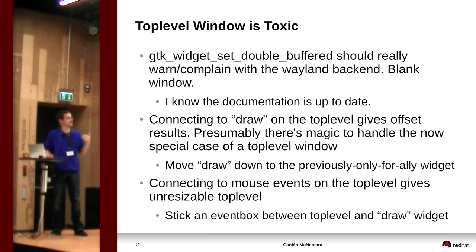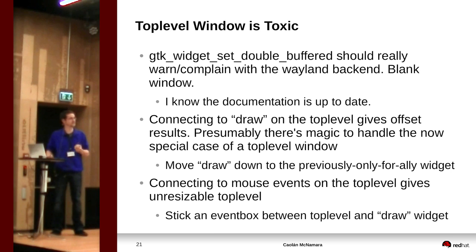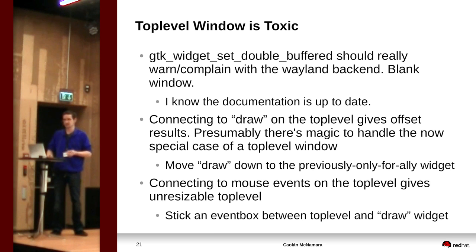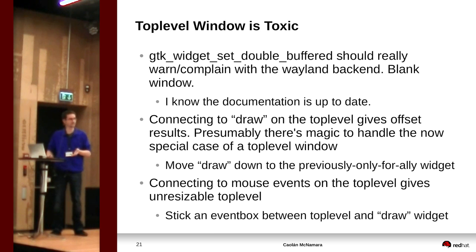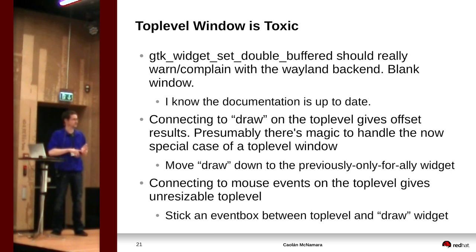The overall solution for anything Wayland-related is to move away from the top-level window and go one level down. We already had a widget underneath the top level that we were using to capture accessibility events. That becomes a far more important widget in GTK3 — it becomes the actual widget we connect events to. So we now draw to that widget: previously it was only used as an accessibility window, but it's now expanded to be the contents of the window in GTK3, and that's what we draw to instead.